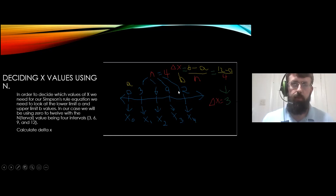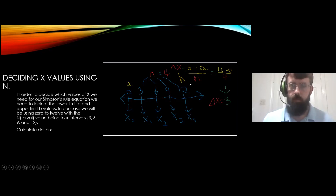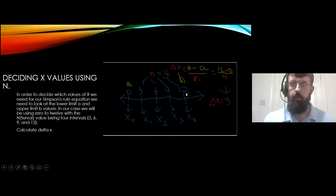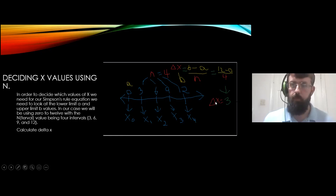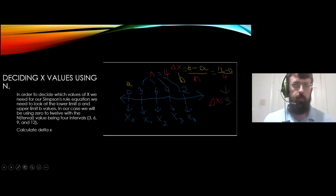Then we have to find delta x, which is another important piece. Delta x equals b minus a, which is 12 minus 0, divided by n, which is 4 — that gives us 3. So delta x equals 3, and we'll be using this in a moment.